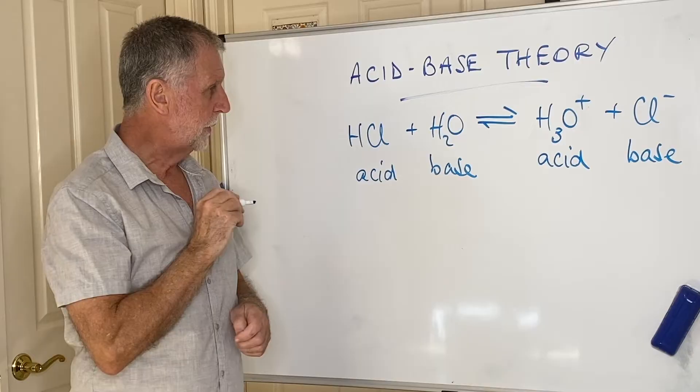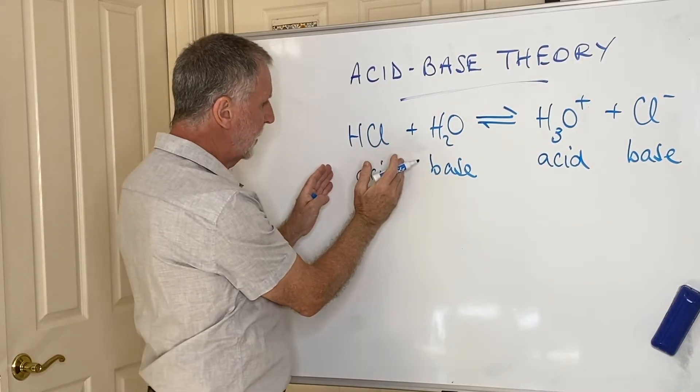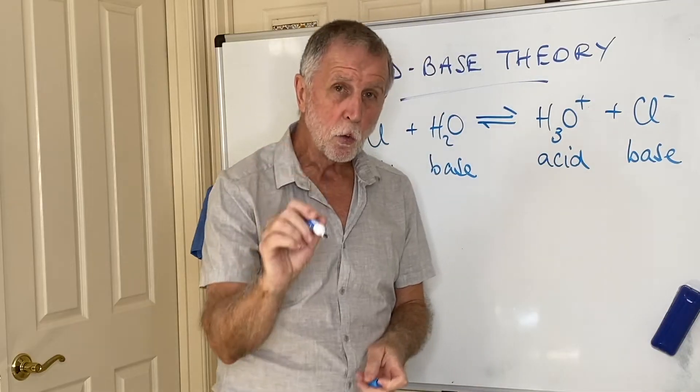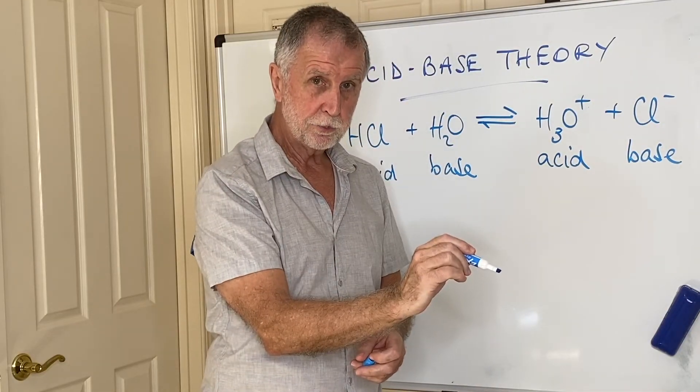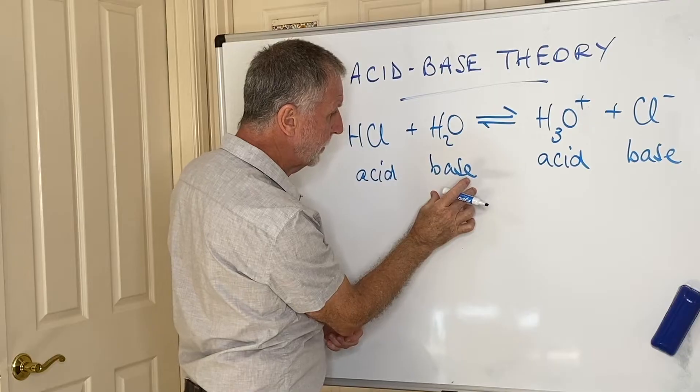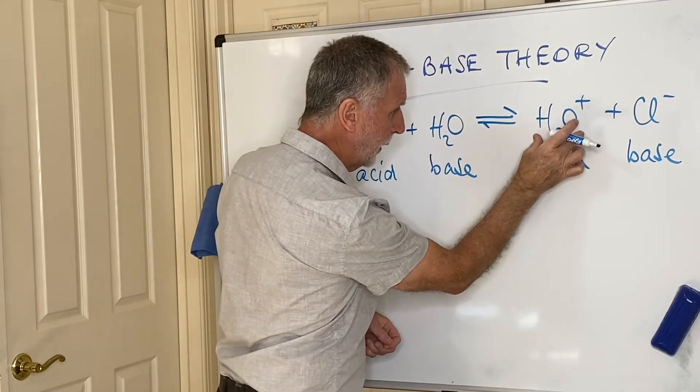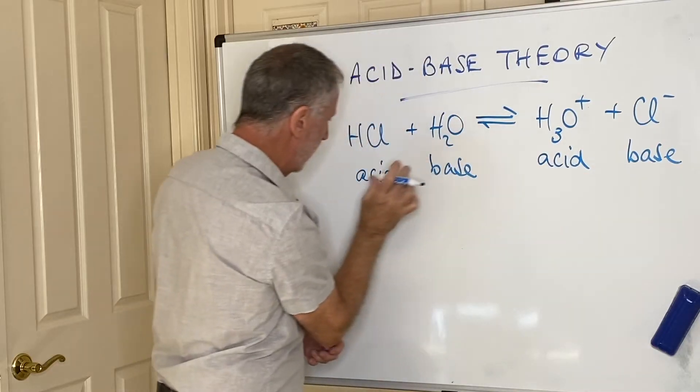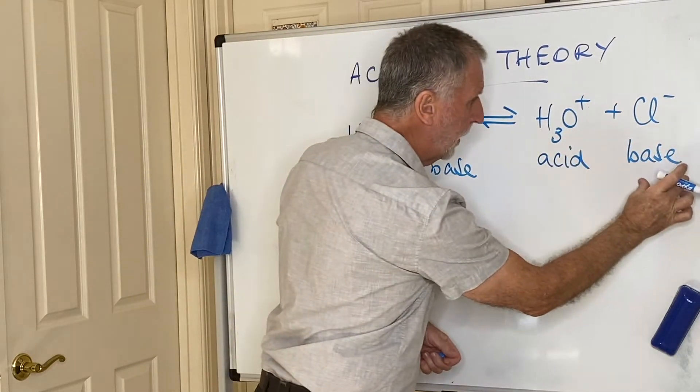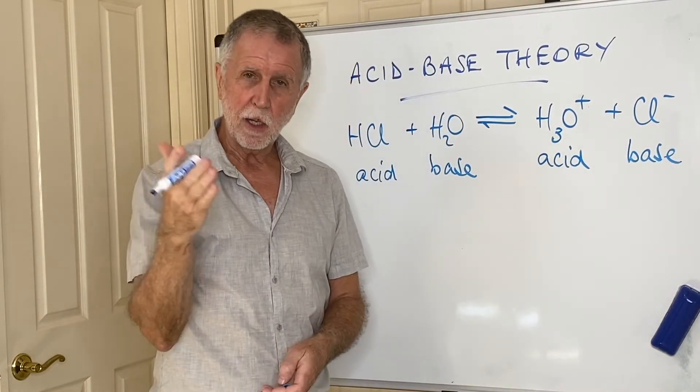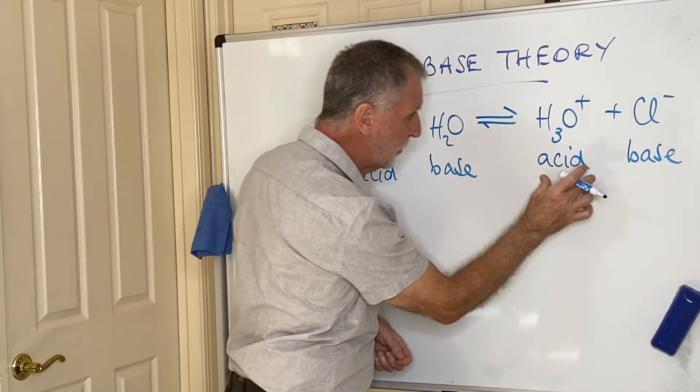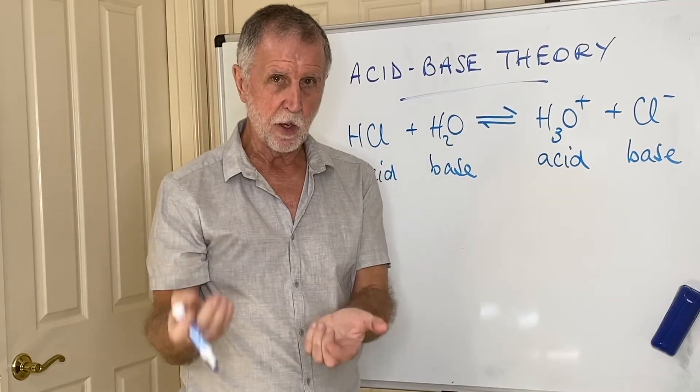Some terminology. HCl is an acid and Cl- is its conjugate base. H2O is a base and H3O+ is its conjugate acid. HCl and Cl- are a conjugate acid-base pair. H2O and H3O+ are a conjugate acid-base pair.